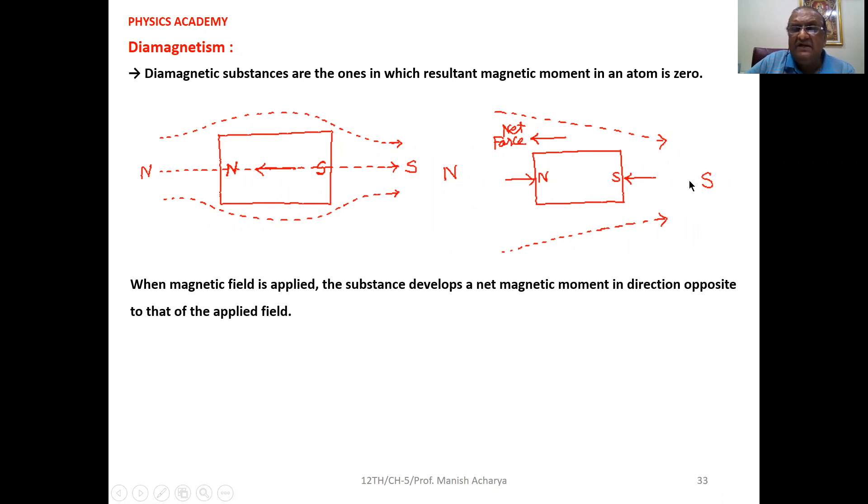Therefore, resultantly, your diamagnetic substance, when placed in the non-uniform magnetic field, it will move from strong magnetic field region to weak magnetic field region. From this behavior, we can understand that this particular sample is the diamagnetic substance.